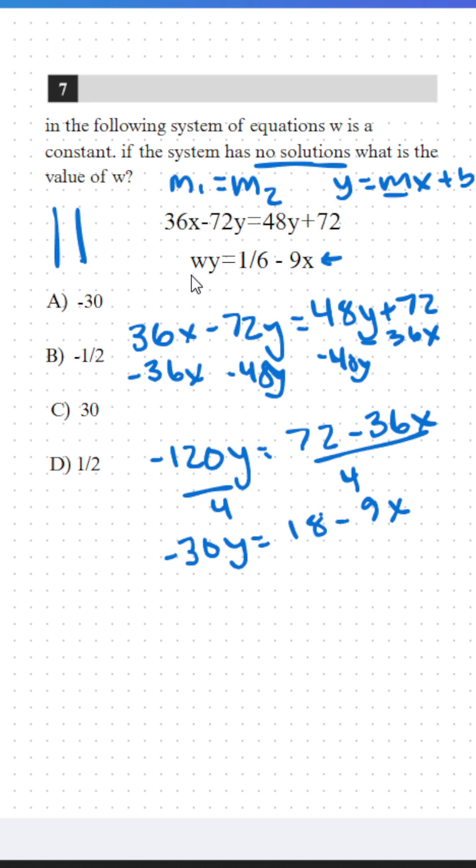So if we take our second equation and we bring it down here, we can get a look at it and we can see that it's wy equals 16 minus 9x.